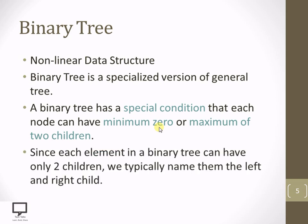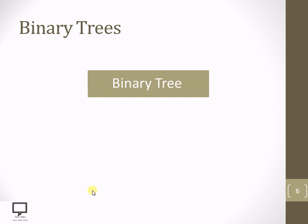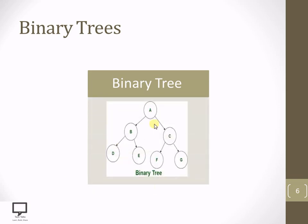Since the maximum number of children is fixed at 2, we can name them as the left child and the right child. Here is a binary tree example: A is the root node, B is the left child of root node A, and C is the right child of root node A. Every node has a maximum of 2 children, so this tree follows the binary tree property and is called a binary tree.